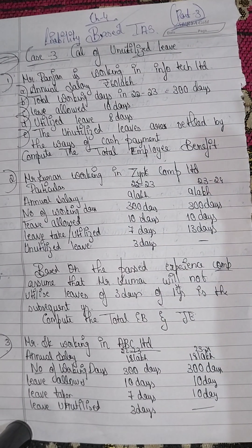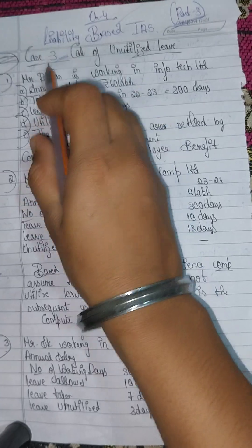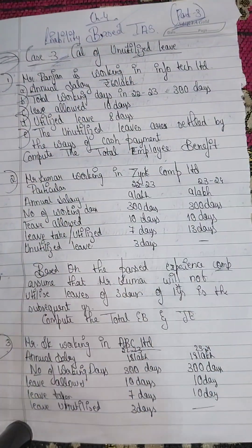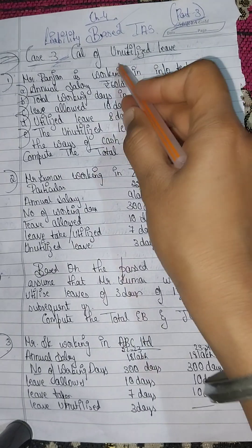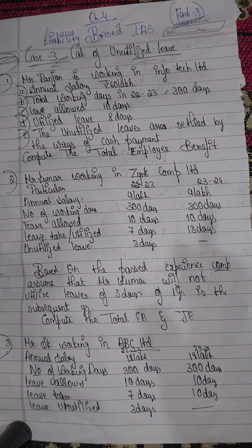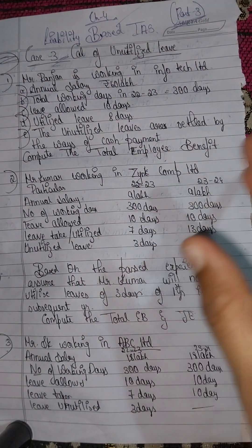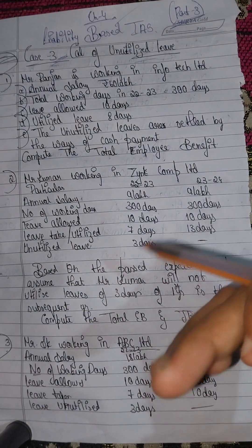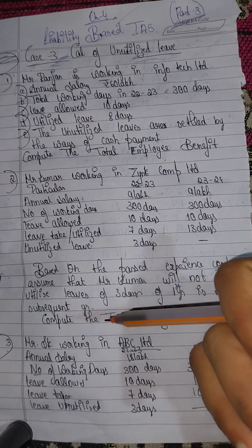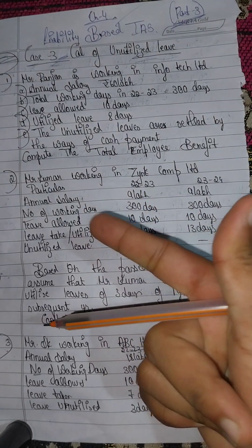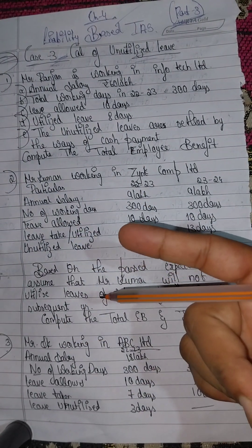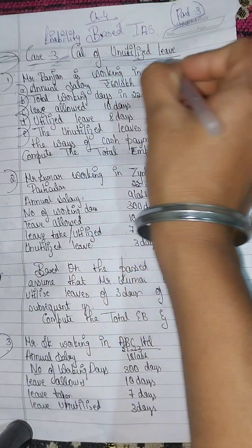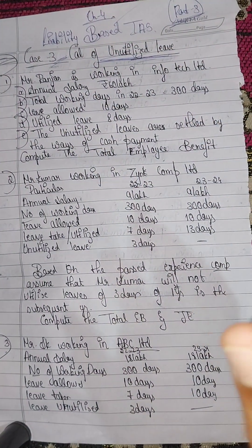In the previous video I explained Case 1 and Case 2. This is Part 3, covering the calculation of unutilized leaves. Case 1 was wages and salary related, Case 2 was also covered, and Case 3 is unutilized leaves.